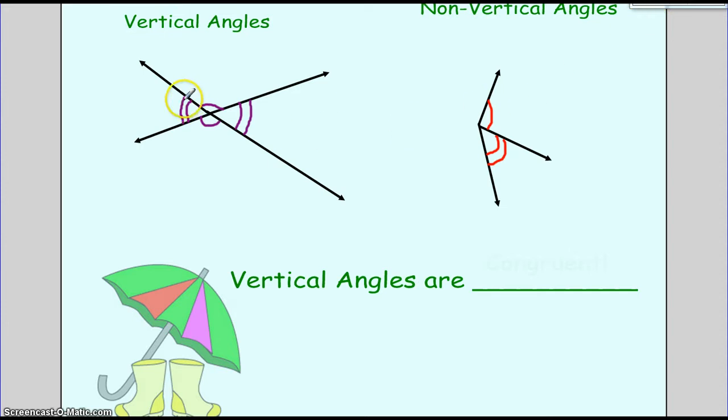Now you'll notice here these two lines show me that these two angles are congruent. This line right here shows me that this angle is congruent with the one across from it over here. These are not vertical angles because they're not across from each other. What's the vocabulary word when these two angles are sitting next to each other? That is adjacent.